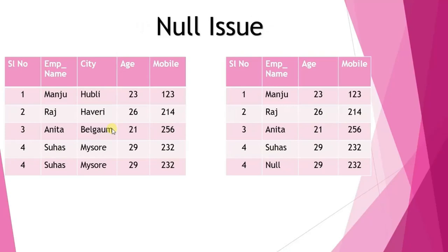Moving to null issues: in the source table, records can be null. This should not happen. Whenever a null value appears, according to the business logic you have to use NVL or NVL2 to replace those null records according to the client document, or you can contact the client to get accurate source files.